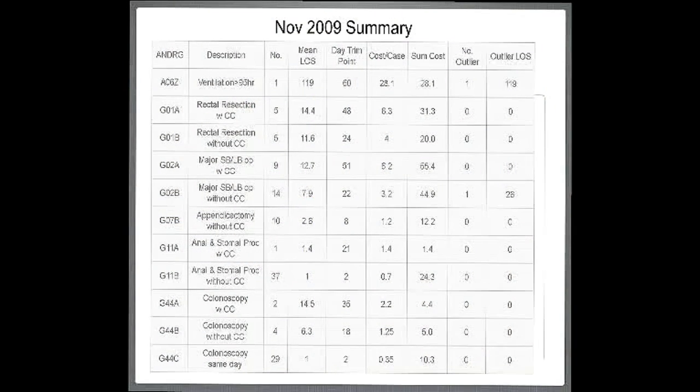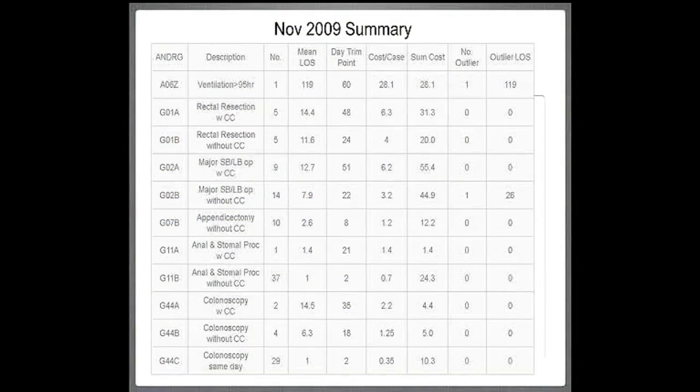I looked at three months of our data in great detail and looked at every single admission to check whether it was correctly coded. From November 2009, we had 165 separations that went into 43 categories. They got a cost weight back then of 1.67, and that gave our unit a total cost weight which you could use with the NOIR — which was about $4,417 — and turn it into how much money you could theoretically be remunerated for doing this work. Interestingly, nine of those 43 DRGs actually accounted for 80% of the cost and 70% of the volume.